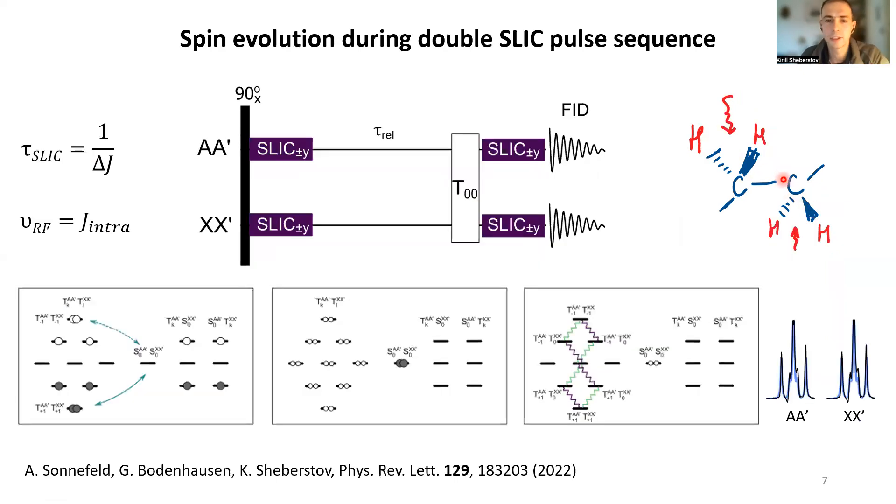It turns out that yes you can, and we call it polychromatic SLIC. If you analyze carefully spin dynamics happening during this process, the conditions for this SLIC pulse should be different. The amplitude of the pulse should be weaker and the pulse itself should be longer.